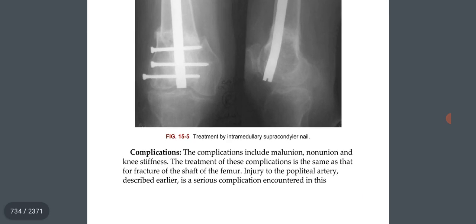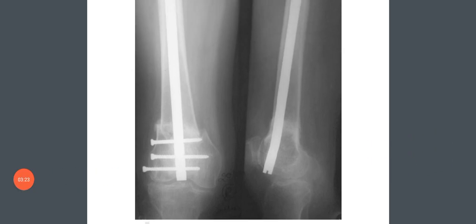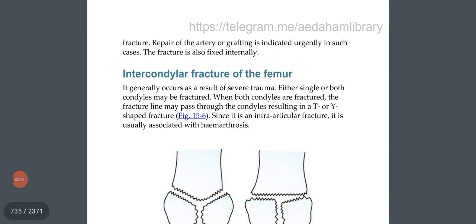Complications include malunion, nonunion, and knee stiffness. The treatment of these complications is the same as that for fracture of the shaft of the femur. Injury to the popliteal artery is a serious complication; repair of the artery or grafting is indicated urgently in such cases, and the fracture is also fixed internally.